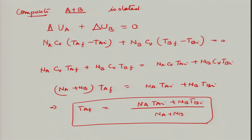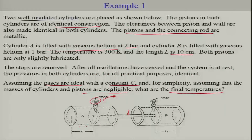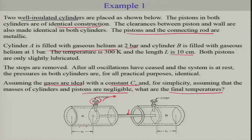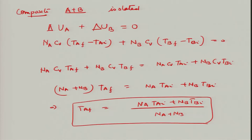This completes the first part — finding the final temperature. The initial temperature is given as 300 Kelvin. The number of moles N_A can be found using the ideal gas equation of state, and from there you can obtain the expressions for the final temperature.